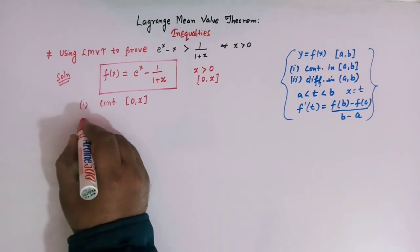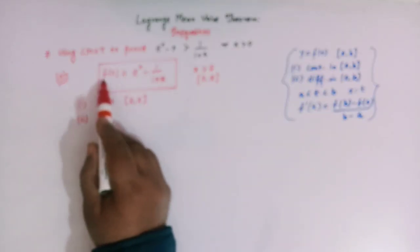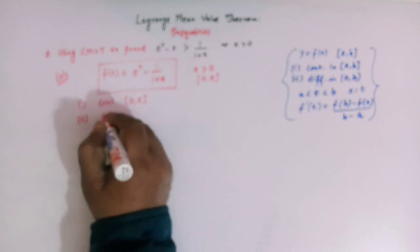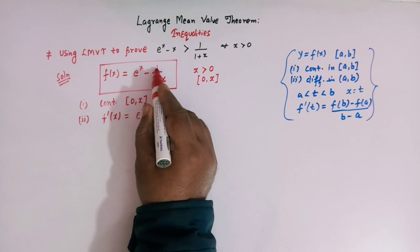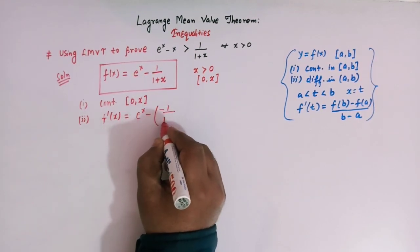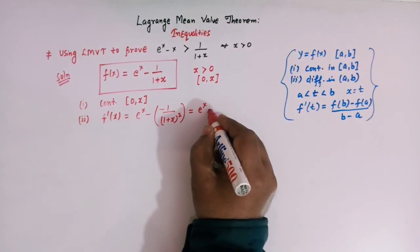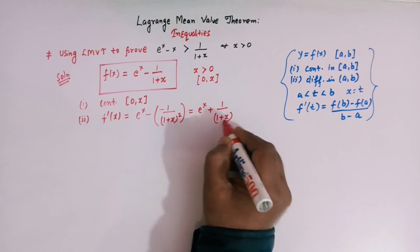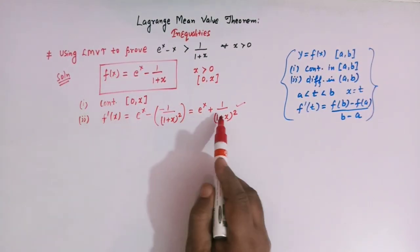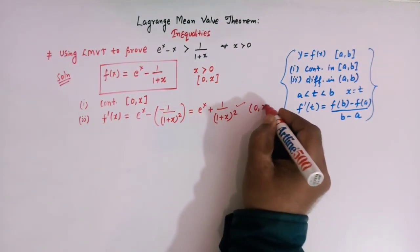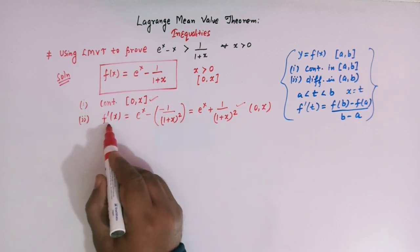Now the second condition: f(x) should be differentiable in this interval. The derivative f'(x) equals e^x plus 1 over (1+x)², since the derivative of e^x is e^x and the derivative of 1/(1+x) is minus 1/(1+x)², and the two negatives make a positive. This derivative exists in the interval (0, x), so f(x) is differentiable there.